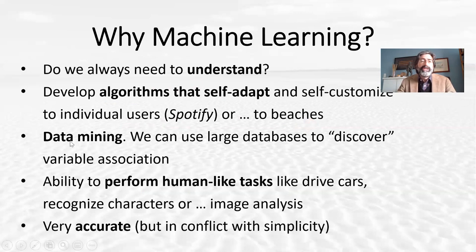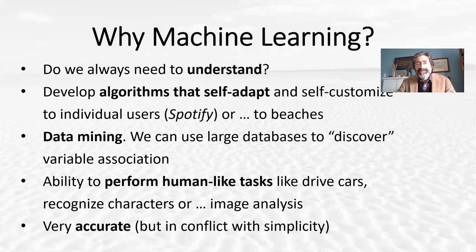Machine learning is used a lot in data mining, probably not so much in our area because we already know what the associations between variables are, but it's certainly an area where machine learning is used a lot. Machine learning can also perform very complicated tasks — it's used to drive cars — so it's normal that in our field it begins to be used for image analysis and many other applications. Machine learning also tends to be very accurate, although the codes are quite complicated, so there is a conflict between accuracy and complexity.